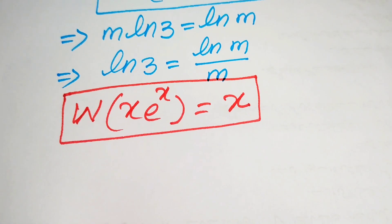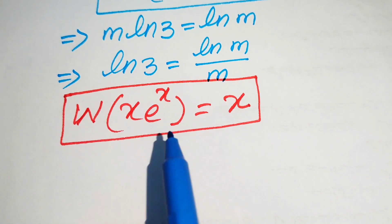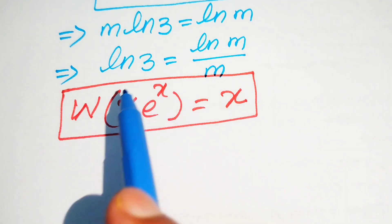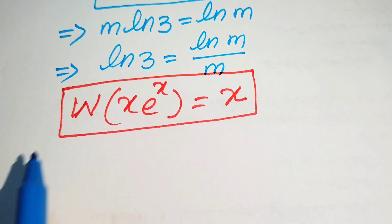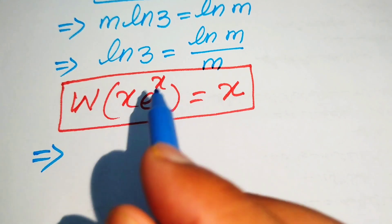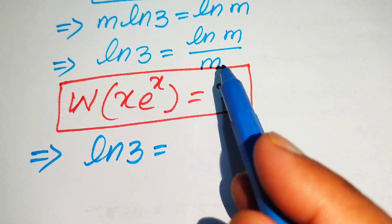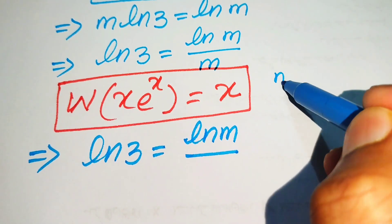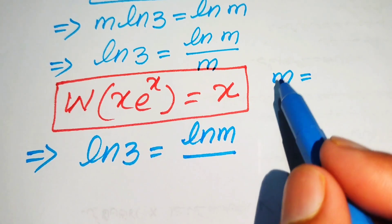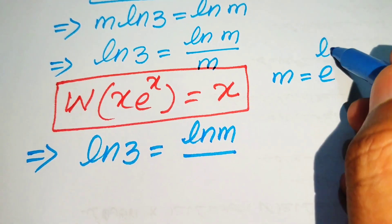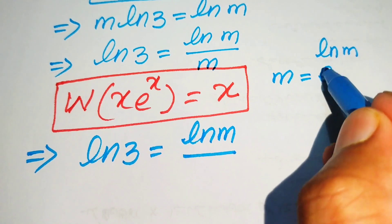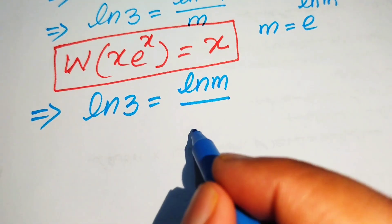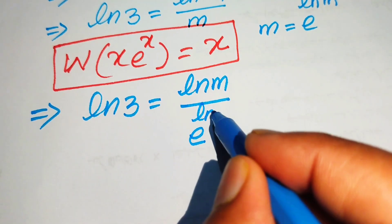In order to apply the Lambert W function, we first make the right-hand side in the form required by it. We introduce e on the right-hand side. We write m as e to the power of log m, since e and log cancel each other. We replace m with this whole term, giving e to the power of log m.